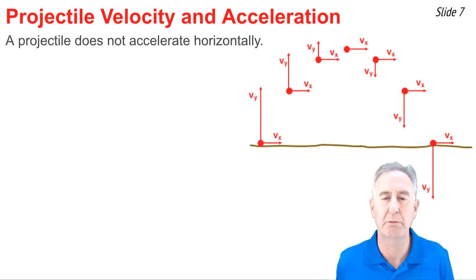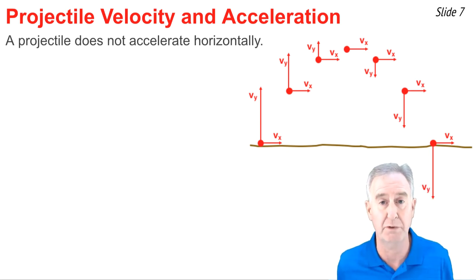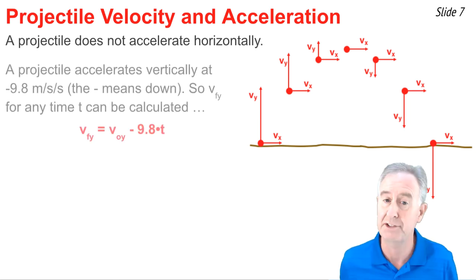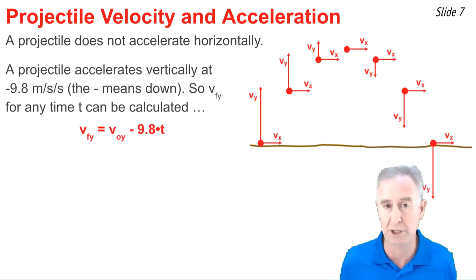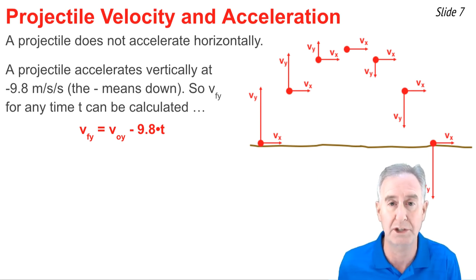To effectively solve projectile problems, it's useful to have a very strong conceptual understanding of some ideas regarding velocity and acceleration. For instance, you need to know that the ax value for a projectile is zero. And it's helpful to know that the ay value for a projectile is negative 9.8. And to be able to use that value in an equation that has it.